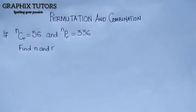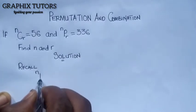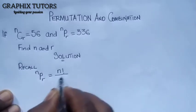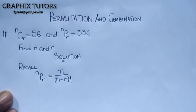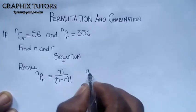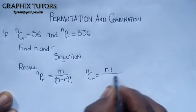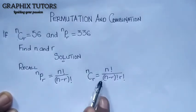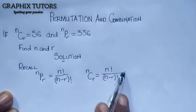Now what we will do first, we need to understand what combination and permutation is. Recall: n permutation R is equal to n factorial all over n minus R factorial. Now we know permutation deals with arrangement, while combination deals with selection.